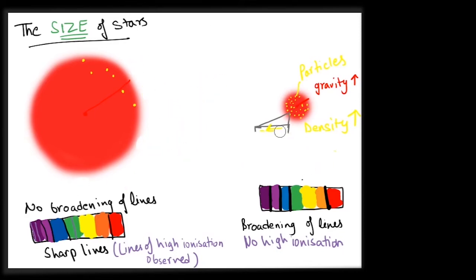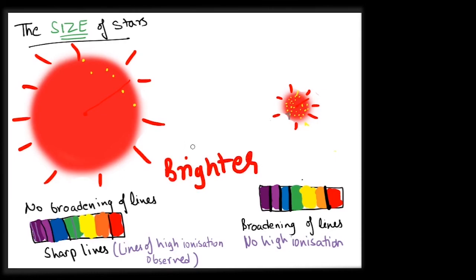A giant star will shine brighter than a smaller star at almost the same distance from us, because luminosity is directly proportional to the surface area.